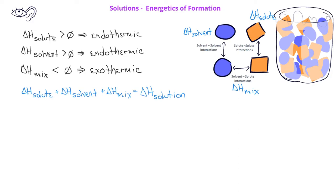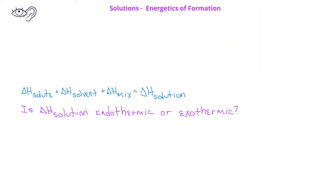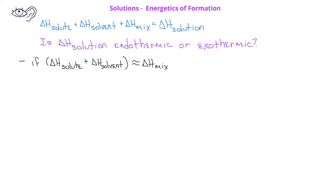Now we have the question: is ΔH solution overall an endothermic or an exothermic process? If we have a mathematical equation with all of these different ΔH values, we can compare the relative magnitudes of each enthalpy value. If the solute enthalpy and the solvent enthalpy are about equal in magnitude to the enthalpy of mixing, then the enthalpy of the solution is going to be fairly close to zero.